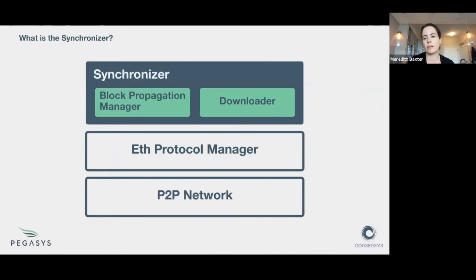And then there's the downloader that's responsible for pulling historical data. So if you spin up your client and you're at block zero and the network's at block seven million, the downloader is in charge of getting you up to seven million. In terms of full and fast sync, we're mostly focusing on the downloader.